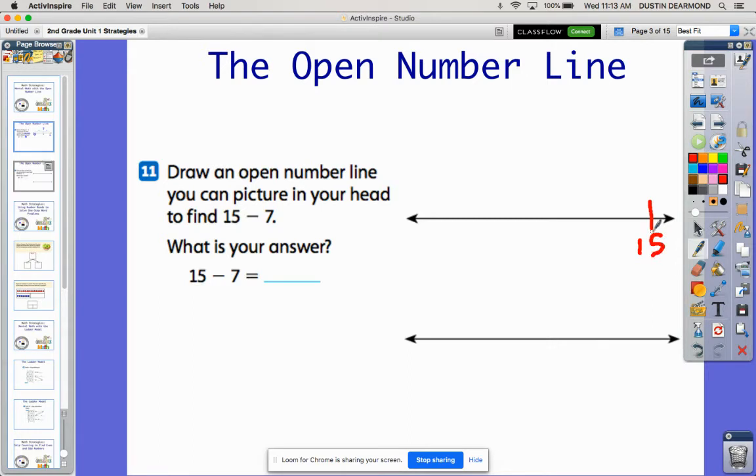Now again, the awesome thing about the open number line and being a mental strategy is that we can each do it a different way in our head. But for most of us, the easiest thing we're going to be doing is to make a 10, like we saw in the last example. So I'm going to jump back to 10.